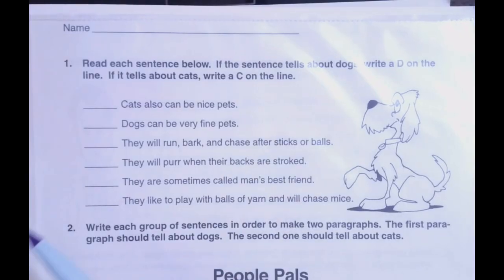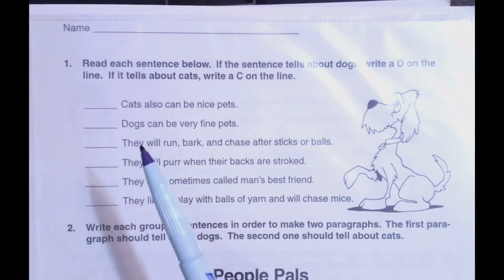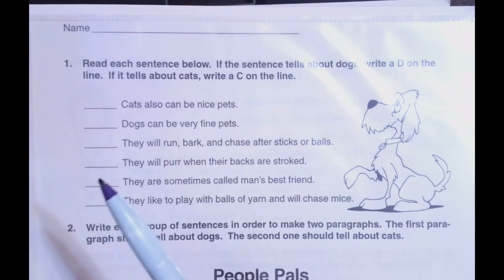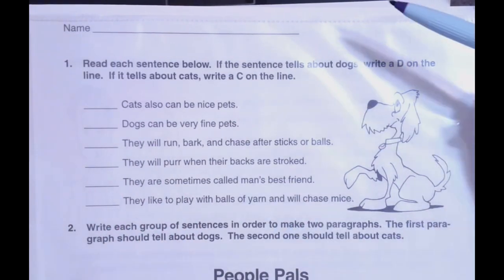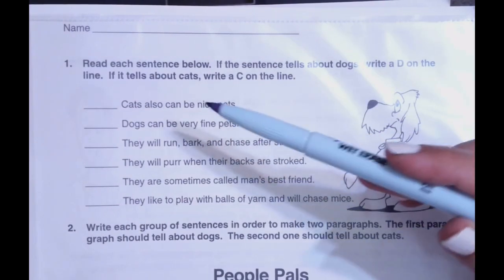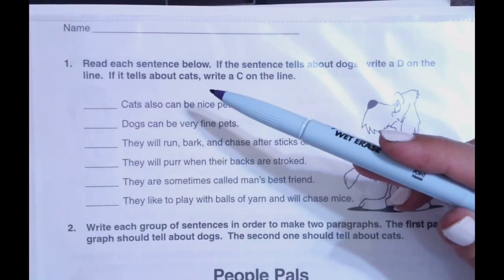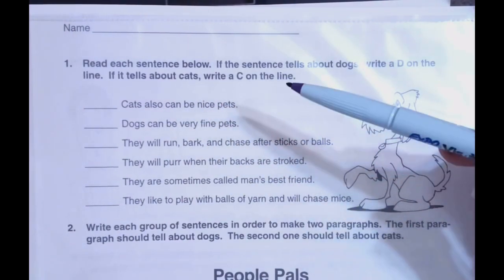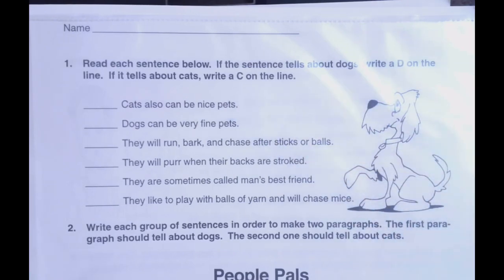Number one: read each sentence below. If the sentence tells about dogs, write a D on the line. If it tells about cats, write a C on the line.